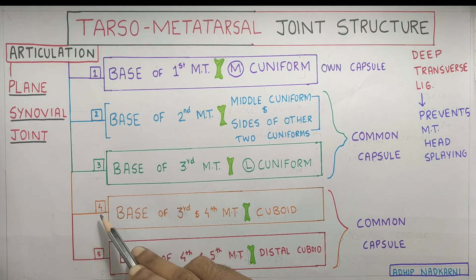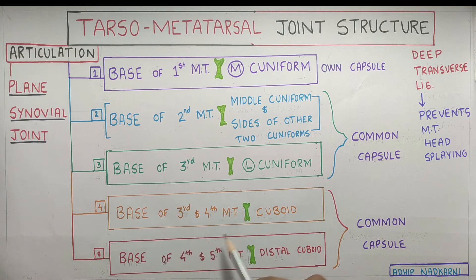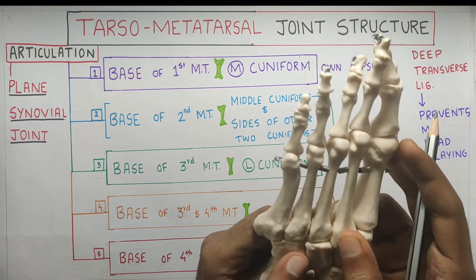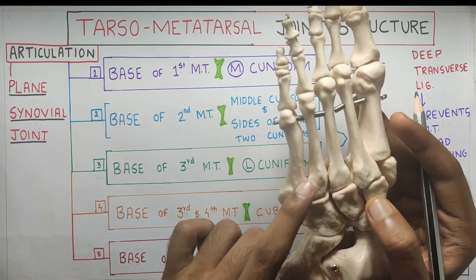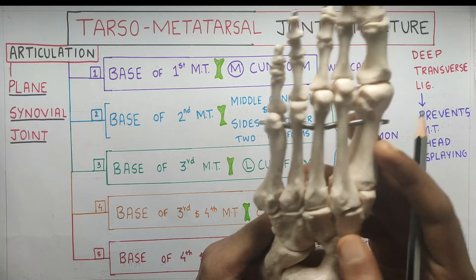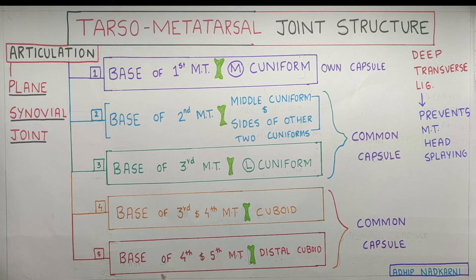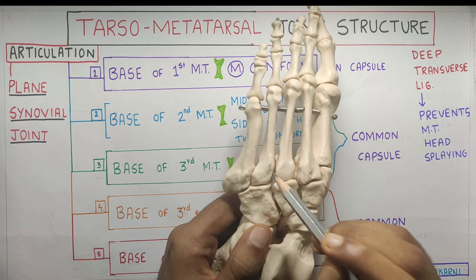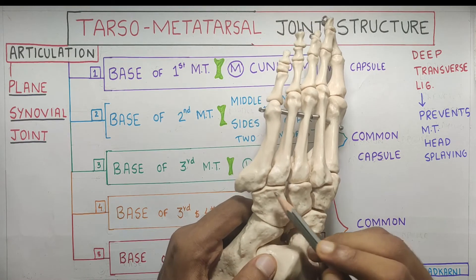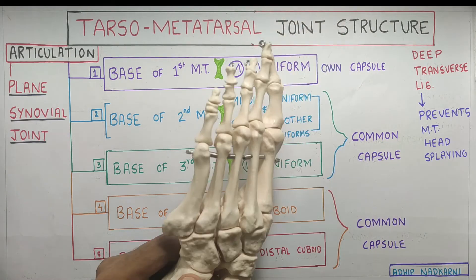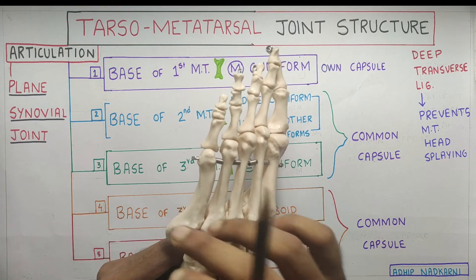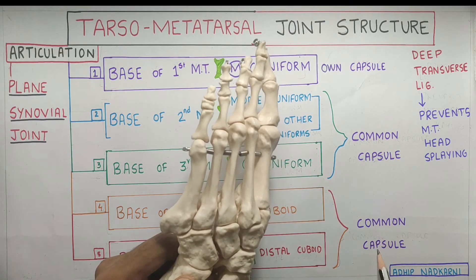Under the fourth articulation, the bases of the third and fourth metatarsals together articulate with the cuboid bone — though the third's articulation is less visible here. The fourth definitely has an articulation with the cuboid, and finally the fourth and fifth metatarsals both articulate with the cuboid and share a common capsule.